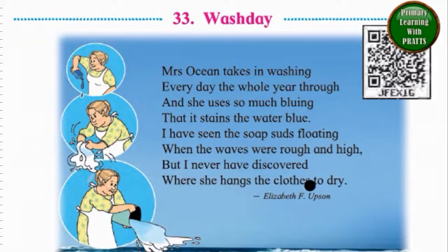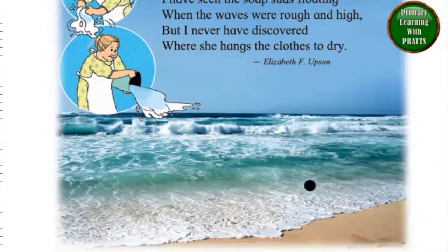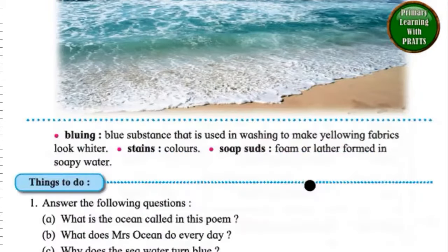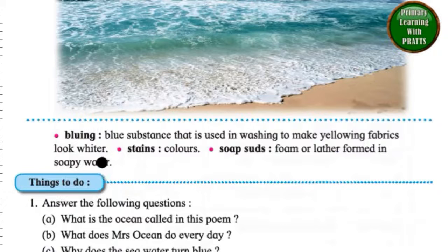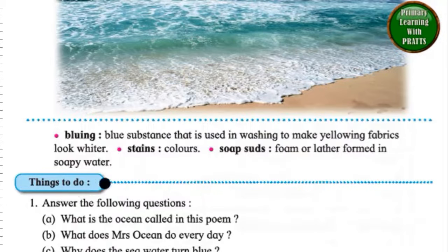Now let's see the new words that we have learnt in this poem. Bluing: a blue substance that is used in washing to make yellowing fabrics look whiter. Stains: colors. Soap suds: foam or lather formed in soapy water.